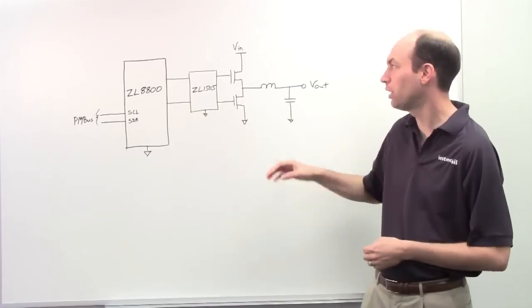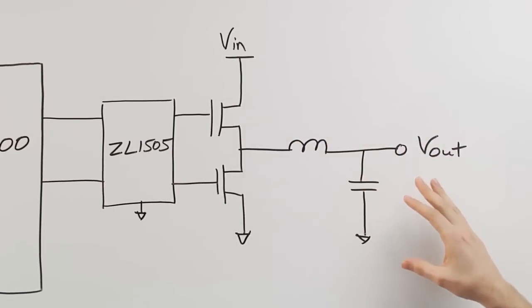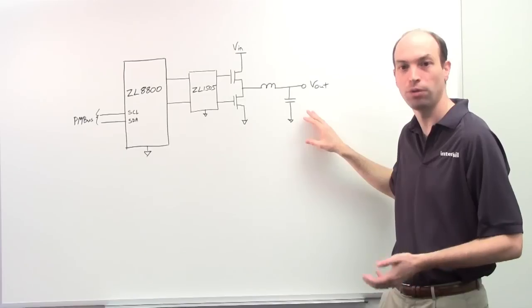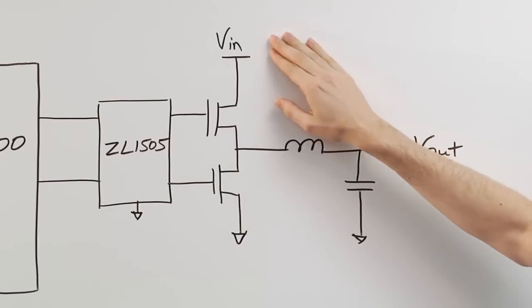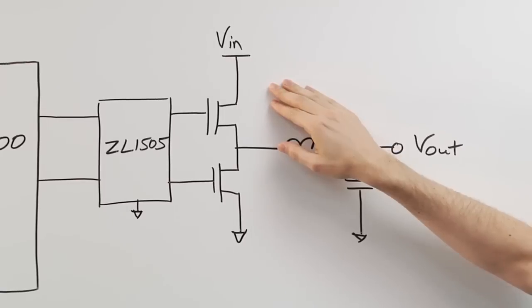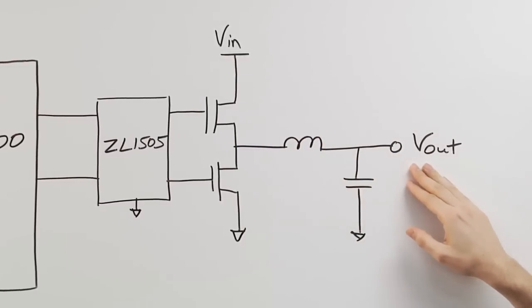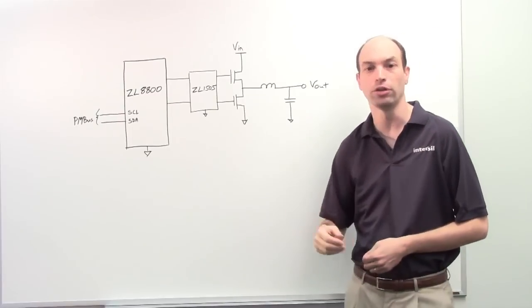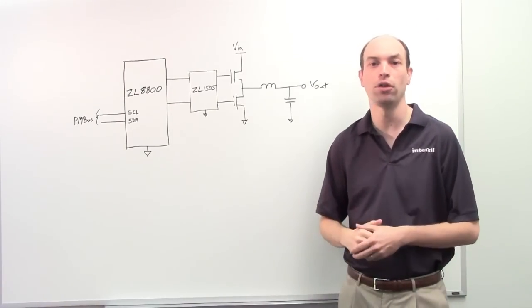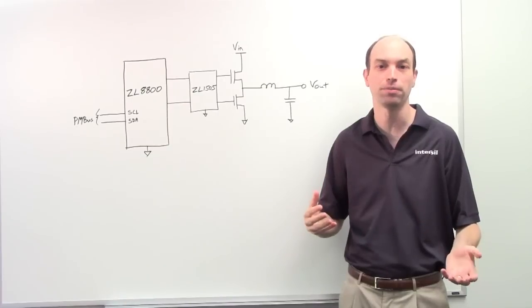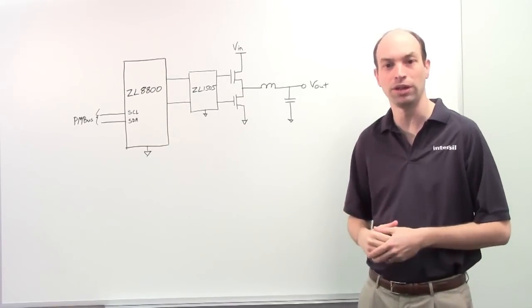Now the benefit of telemetry is you're able to monitor all the different aspects of the power supply in real-time. So at any point you can know what the input voltage is, the input current, the output voltage, and also the associated output current of the load. This gives you the ability to continuously monitor your supply in the application and respond to faults and events that occur.